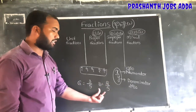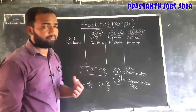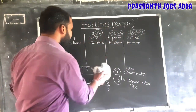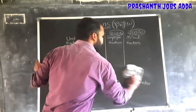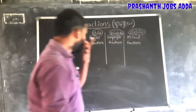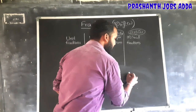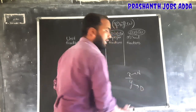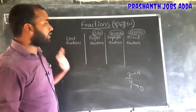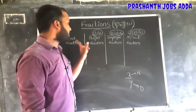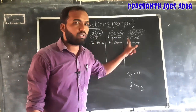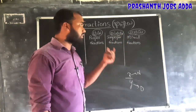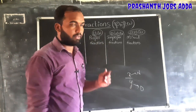So we indicate girls and boys as fractions like this. Now let's look at the types of fractions: unit fractions, proper fractions, improper fractions, and mixed fractions. These are the different types of fractions we have. Let's enter each topic clearly.